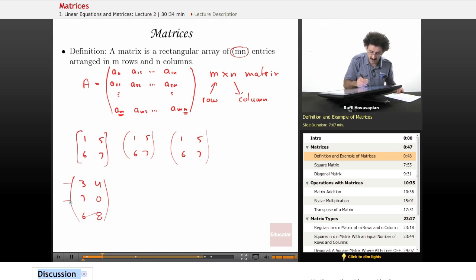This is going to be three rows, two columns. So this is a three by two matrix. You might have something like this, which is a one by one matrix. A one by one matrix is just a number.